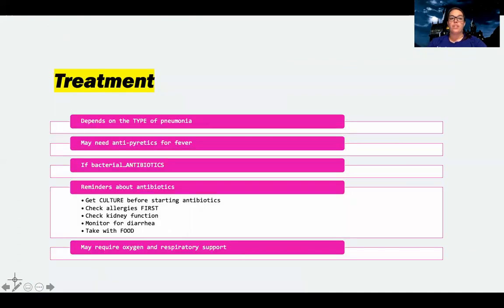So what's our treatment for these patients? It's going to depend on the type of pneumonia. For fungal pneumonia, bacterial pneumonia, we can give antibiotics or antifungals. For viral pneumonia, we can only give really supportive care. So it just depends on the type, which is why we always want to get a culture first. We always want to see what's growing first before we try to treat it.